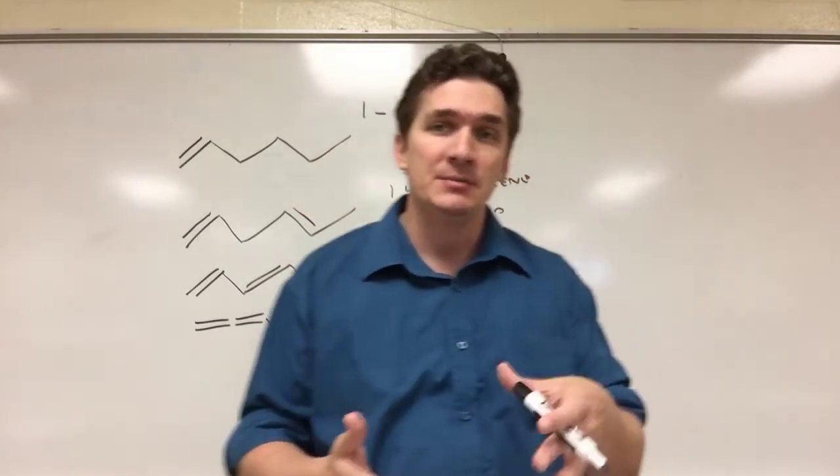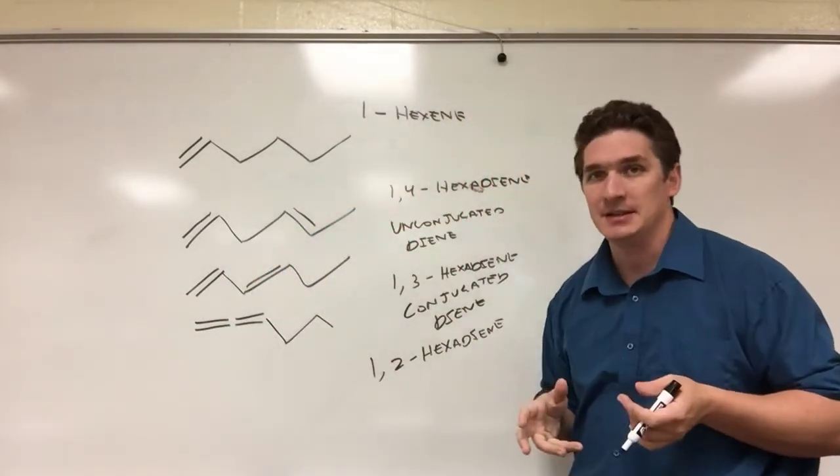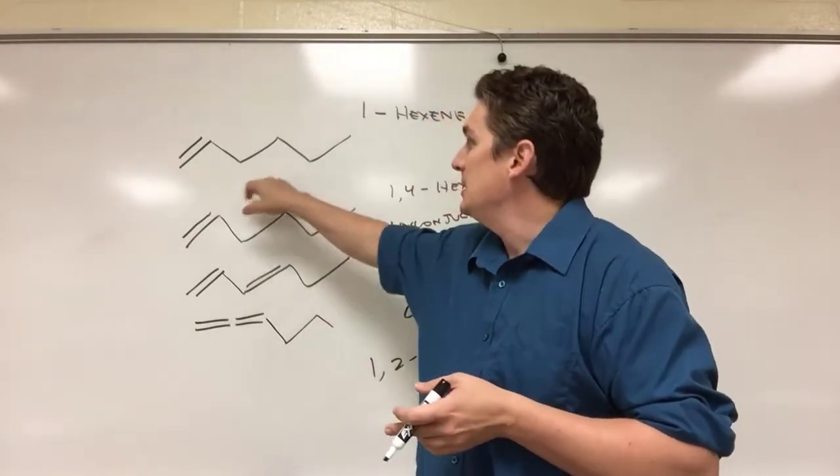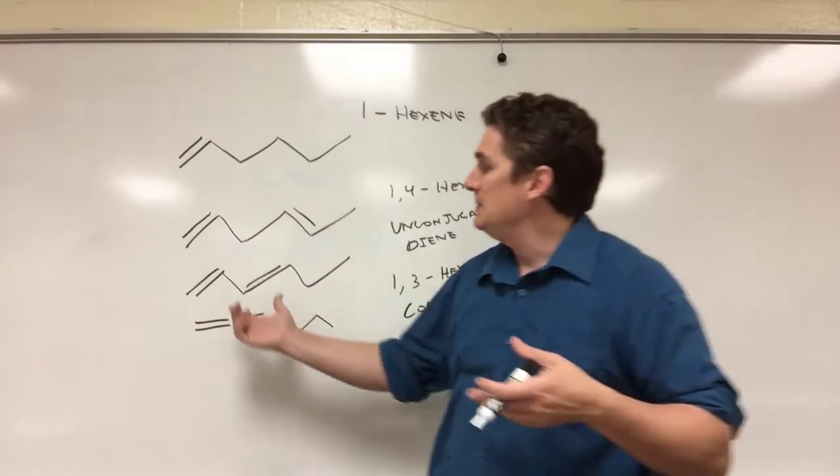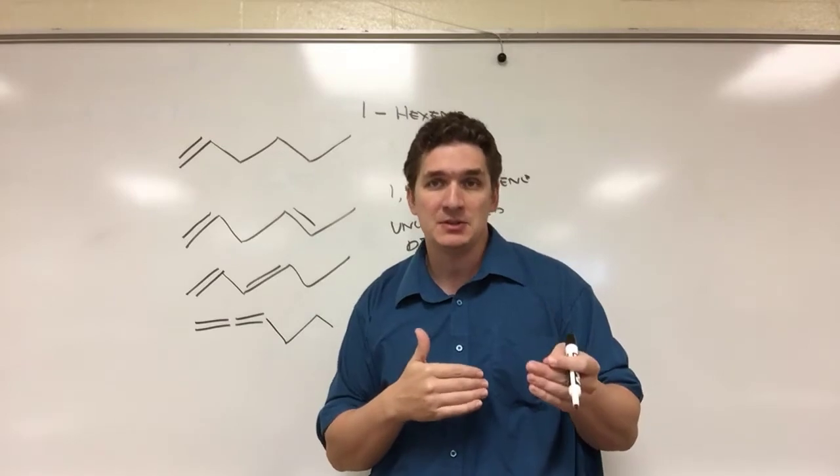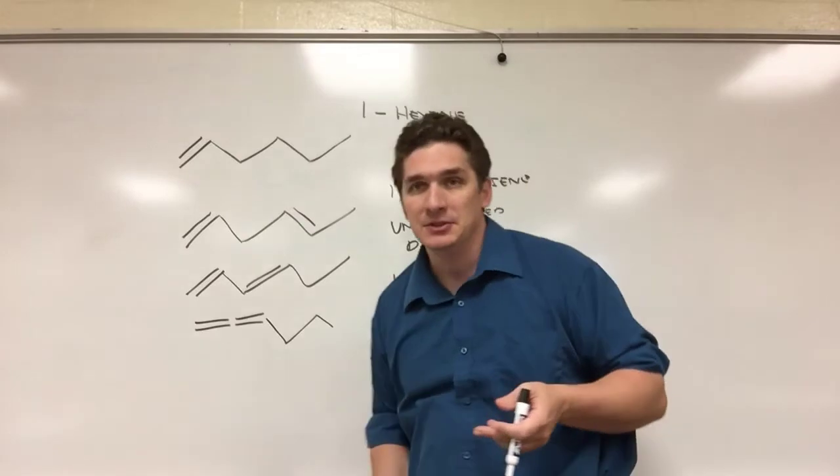So when it comes to dienes, one, we name them by giving the double bond position and doing that diene there. Second is that we've got three different ways to describe them. We have unconjugated, meaning that they're in the same compound but they're not near each other. Conjugated, meaning that the double bonds are near each other and they're separated by a single carbon-carbon single bond, and then cumulated where they're on top of each other.